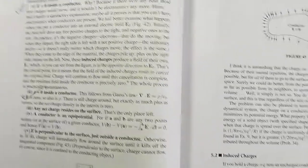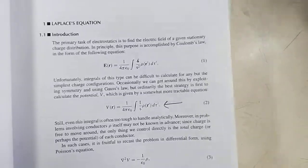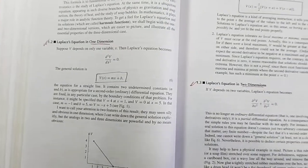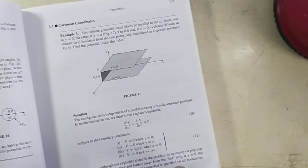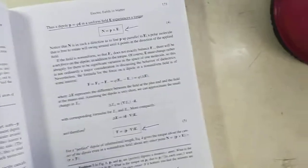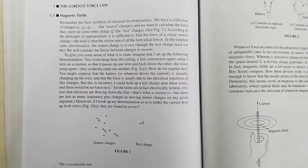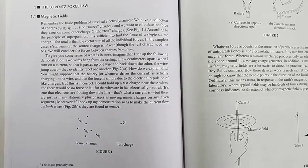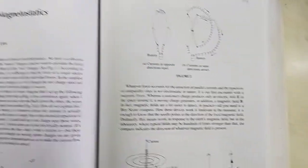Then comes the conductor part and so on. I'm just skipping this chapter for now, and then comes the potential. Now I am going to the magnetostatic part.